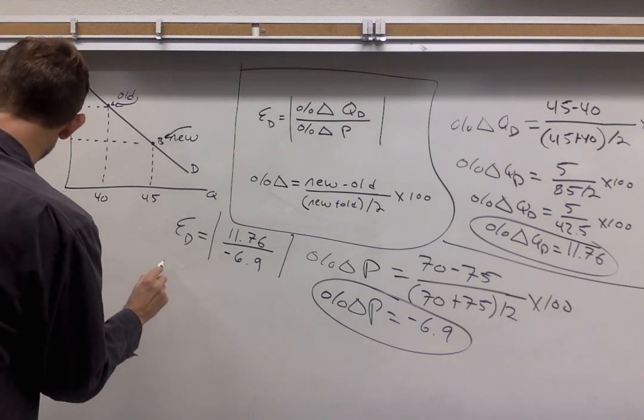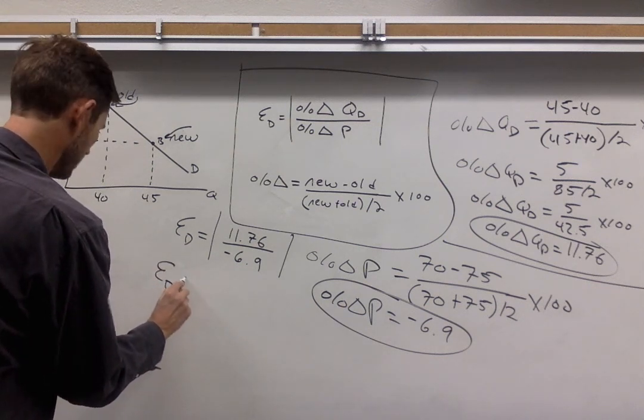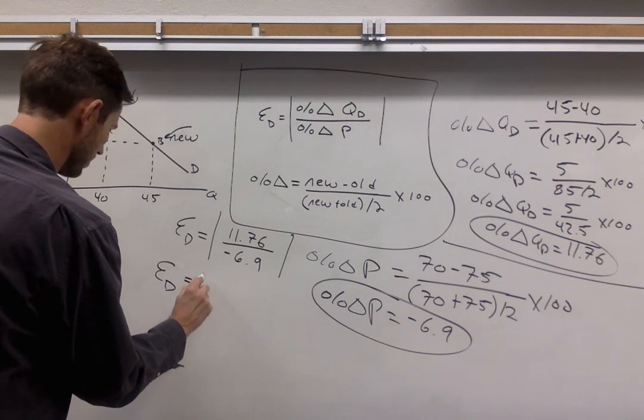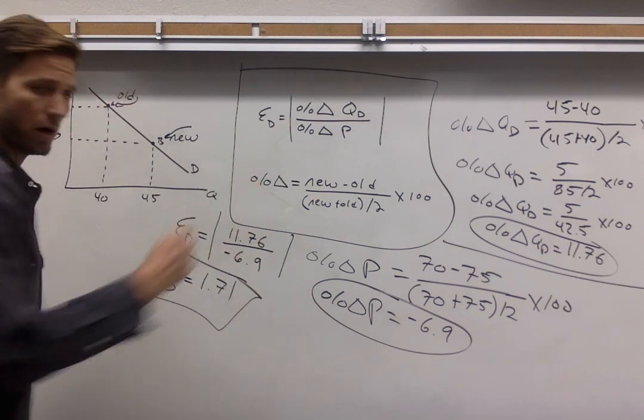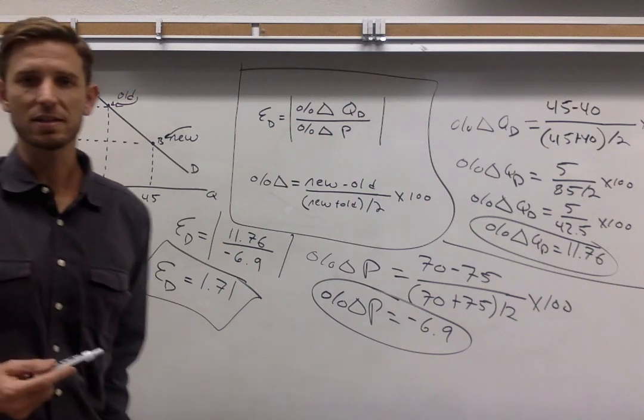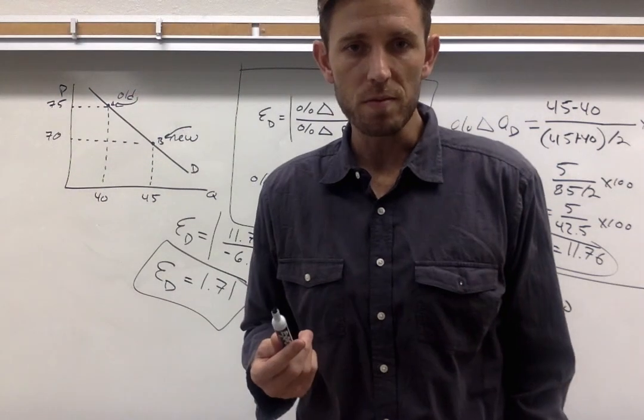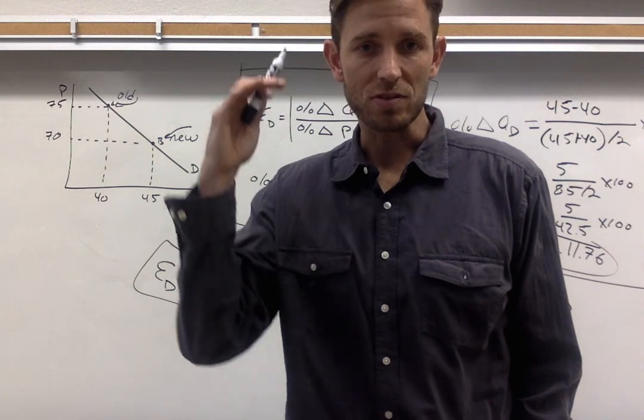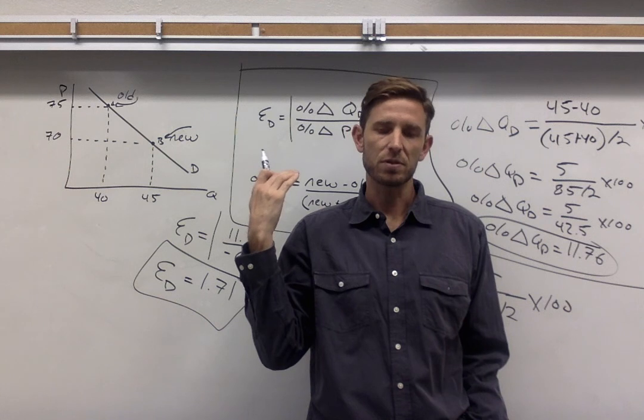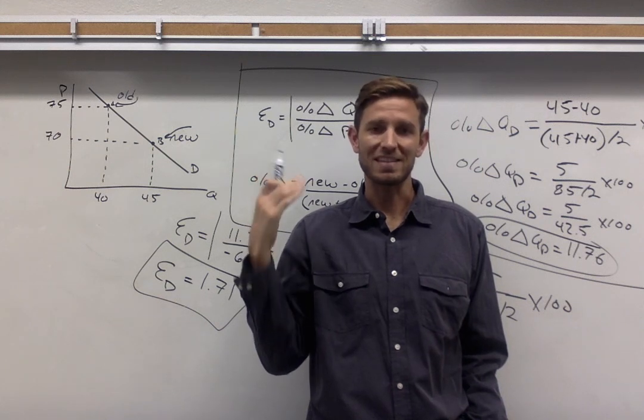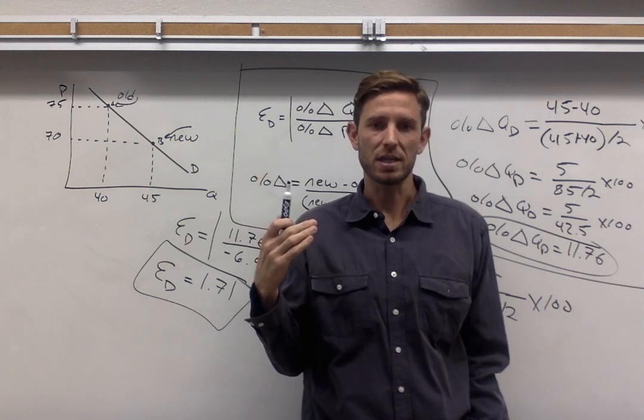And so that's going to tell me that the price elasticity of demand in this particular case is going to be 1.71. There we go. That's our final answer. Price elasticity of demand is 1.71. That's a number that's greater than 1, and therefore you can draw the conclusion that demand for this particular product is classified as elastic rather than being inelastic.